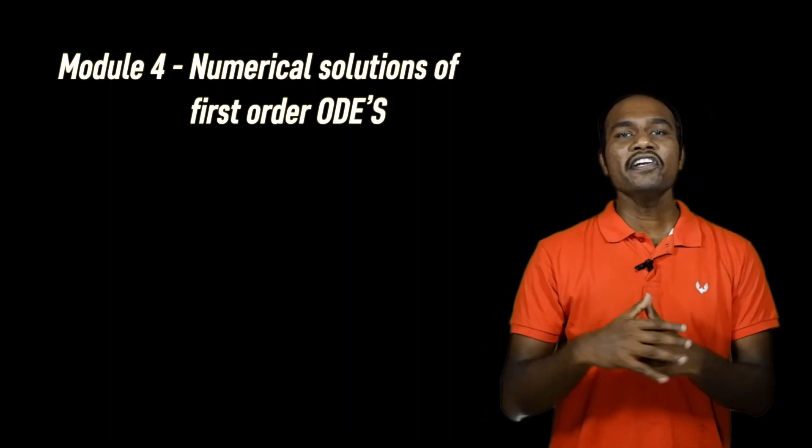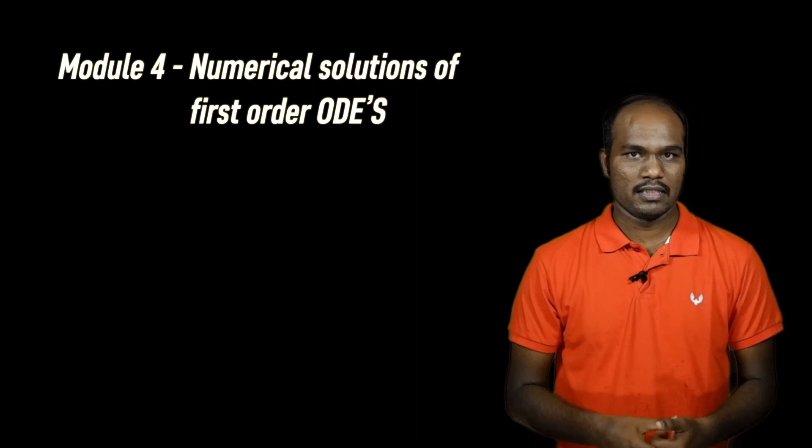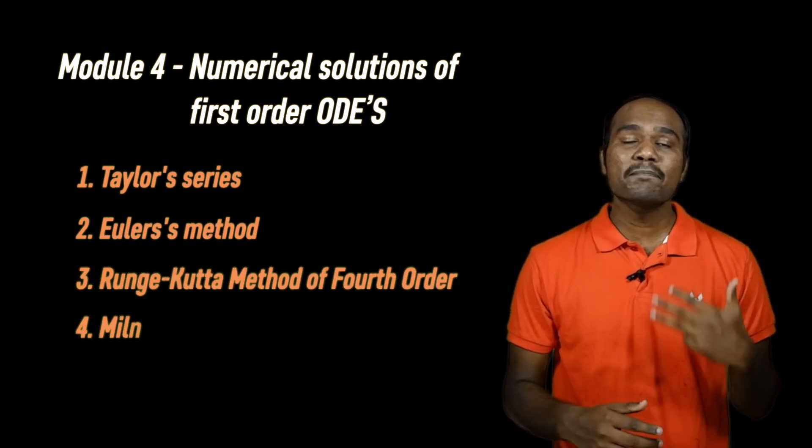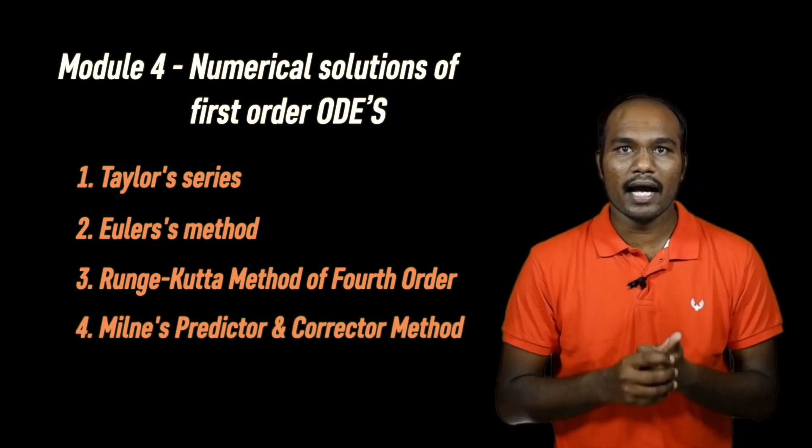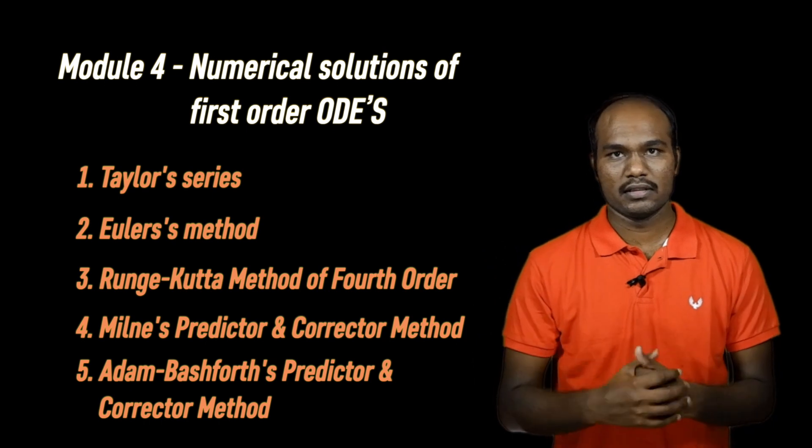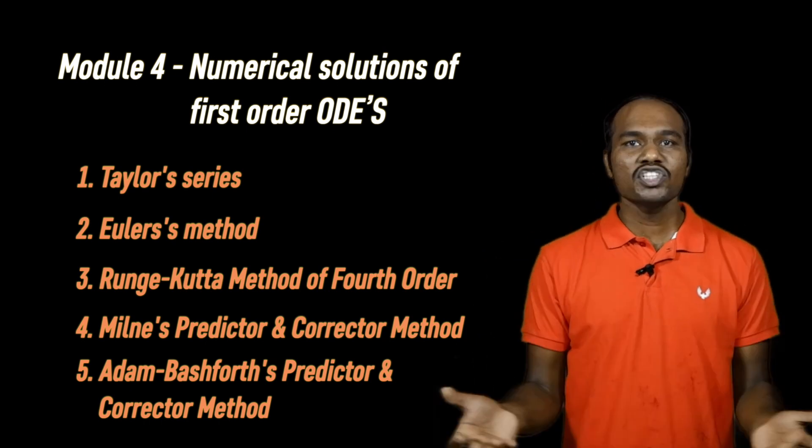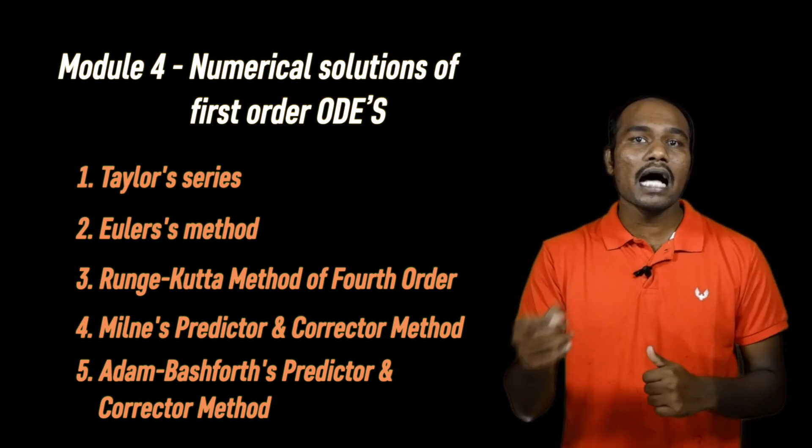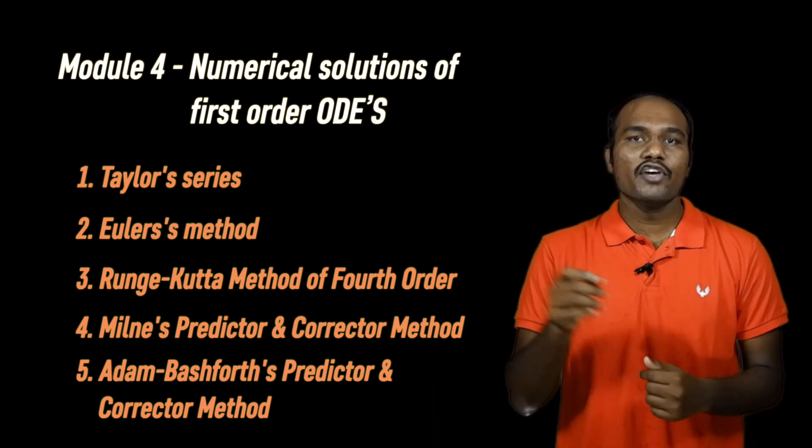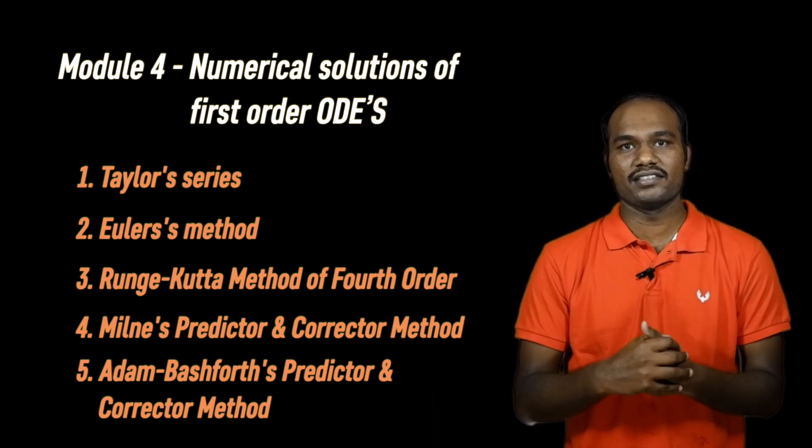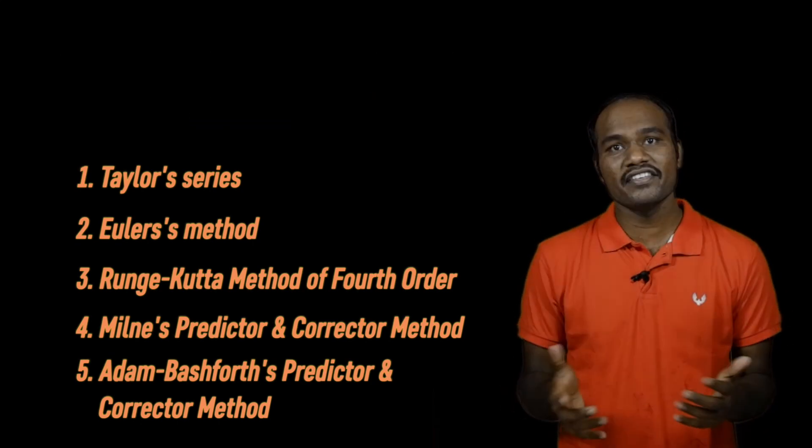There are 5 numerical methods in this module: Taylor series, Euler's method, RK method, Milne's predictor and corrector formula and Adams Bashforth corrector and predictor formula. There will be 6 questions in a module, right? So all these methods are asked in your question paper. If you want to answer 3 questions, you just have to learn 3 methods. But learn one more method to be safe.